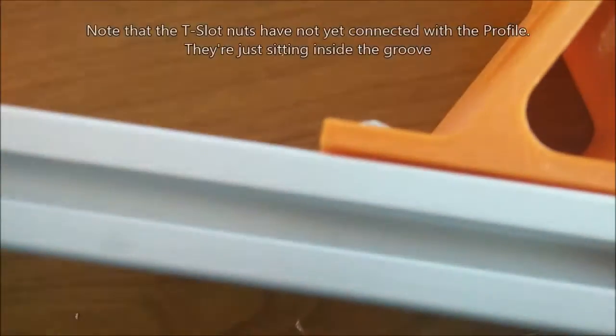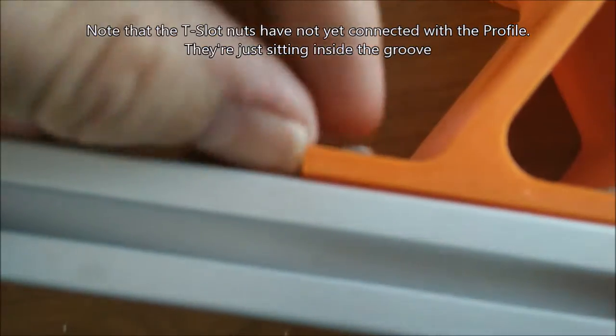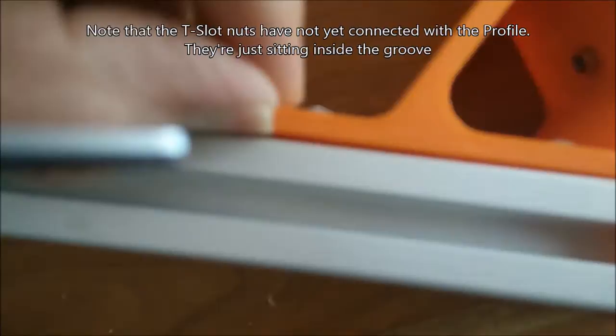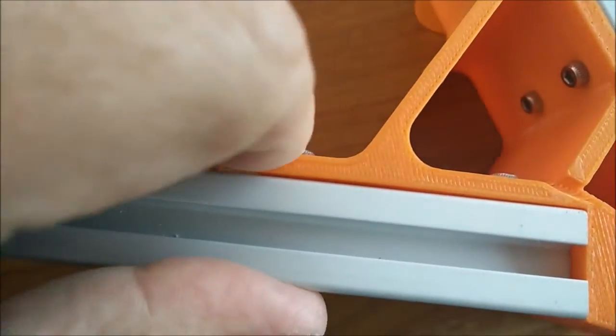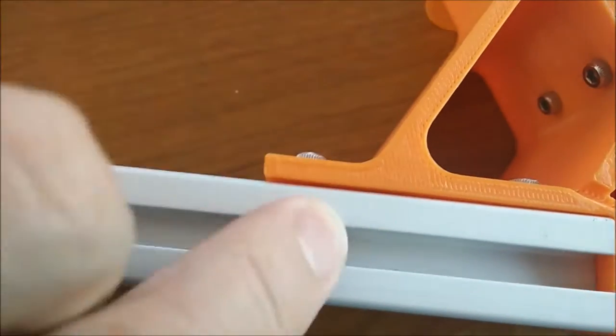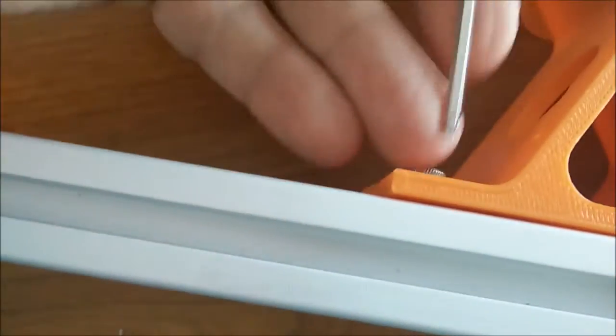So how do you get the T-slot to connect with the profile? You can see here there is a gap between the plastic and the aluminium profile.